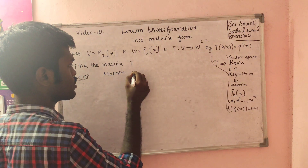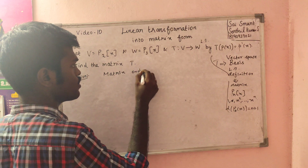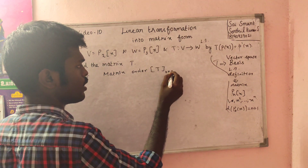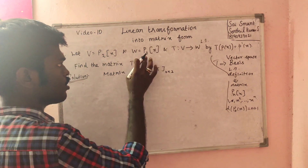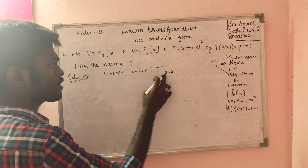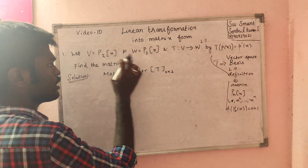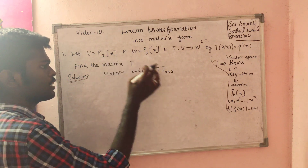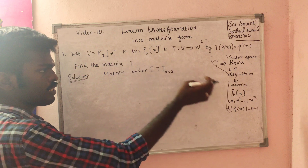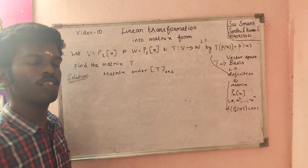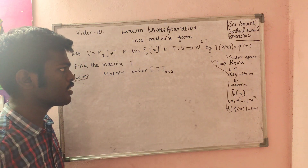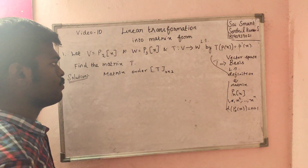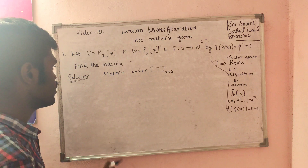The matrix is 4 by 3. How do we get 4 by 3? It is codomain basis cross domain basis. Codomain dimension is 4 and domain dimension is 3.